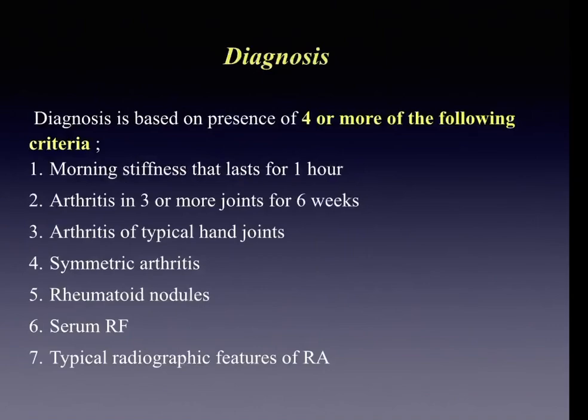Treatment of rheumatoid arthritis aims mainly at relieving pain and inflammation, including corticosteroids and disease-modifying drugs like methotrexate. Rheumatoid arthritis is a chronic multi-system disease characterized by inflammatory arthritis of peripheral joints with symmetrical distribution.